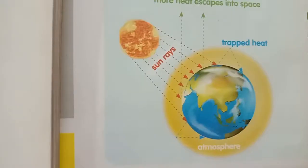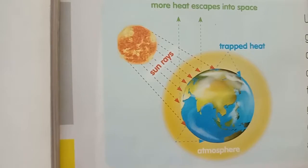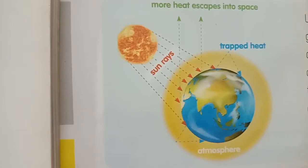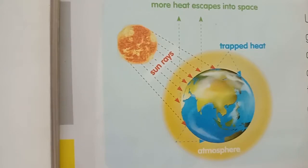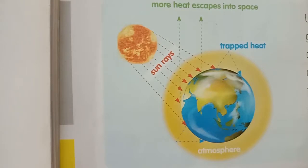Children, observe this picture. When the sun heats the earth, the greenhouse gases of earth — such as water vapour, carbon dioxide, nitrous oxide, and methane — retain some of the heat on the earth's surface. This is called the greenhouse effect. Without this natural greenhouse effect, the earth would not be warm enough for humans to live.